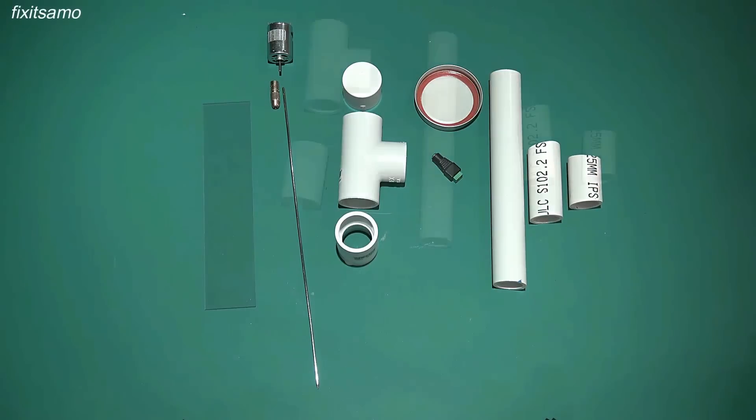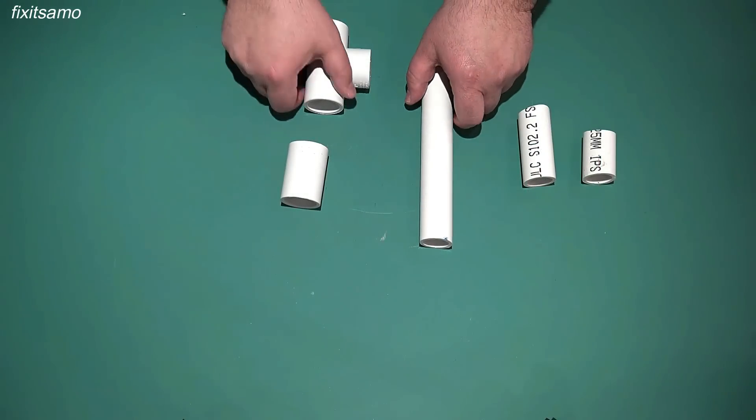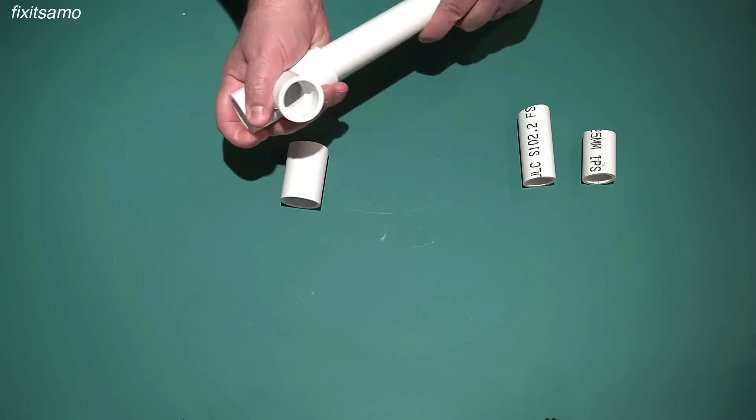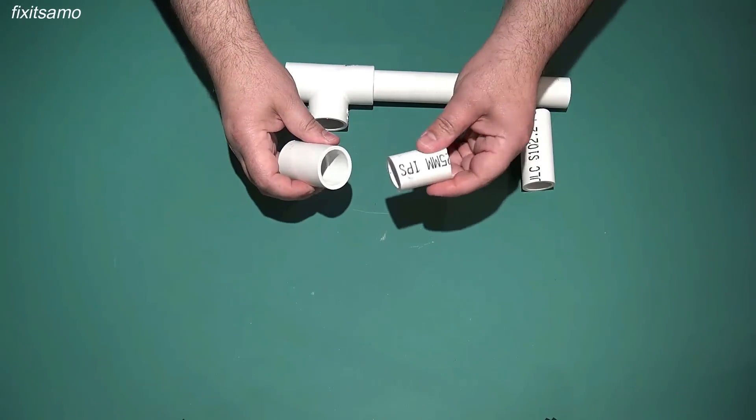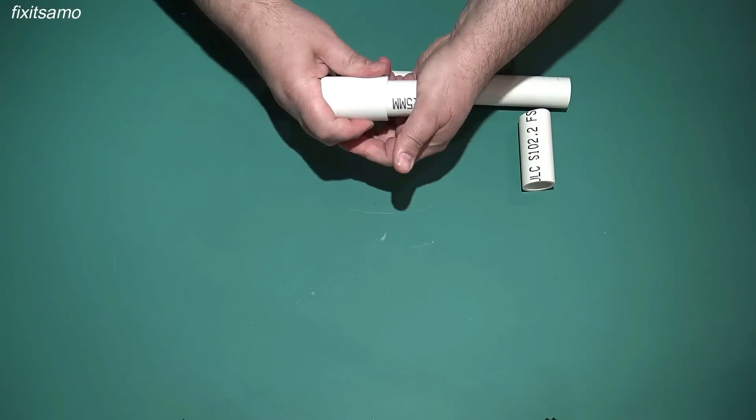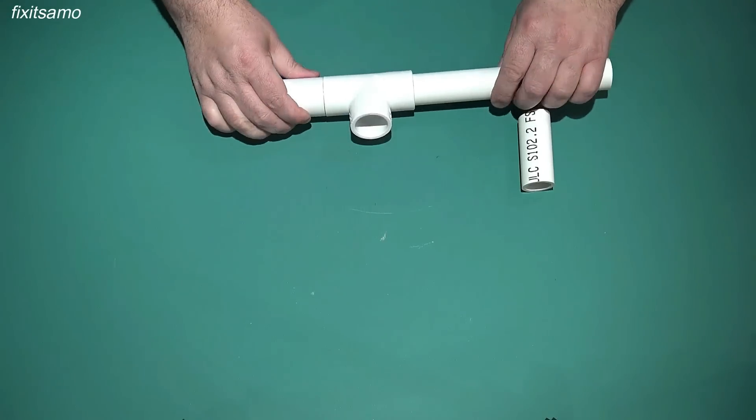So let's get started. So now we're going to start connecting the PVC pipes. We're going to take the T and put it on the 9 inch like this, and we take the 2 inch, connect it here and it goes over here.